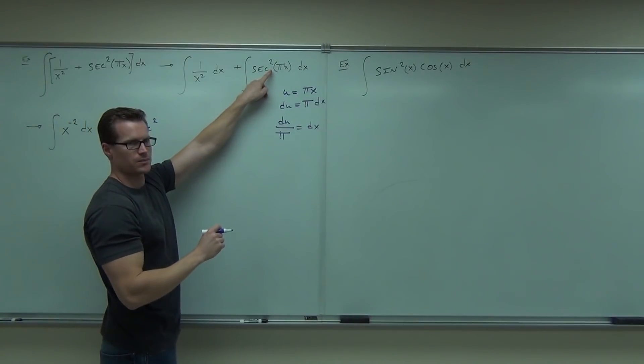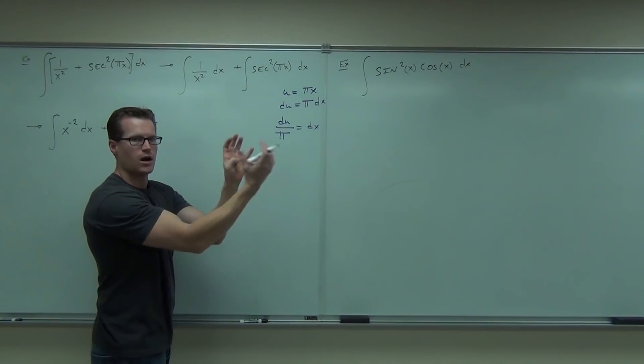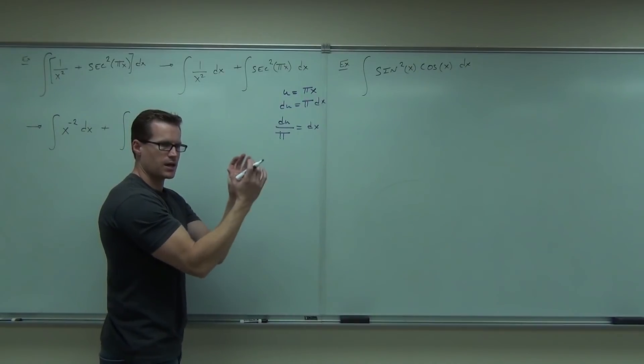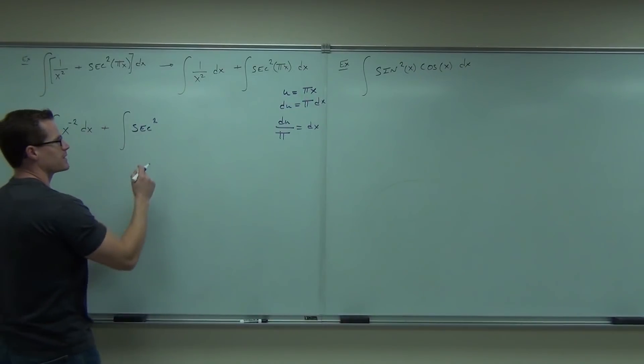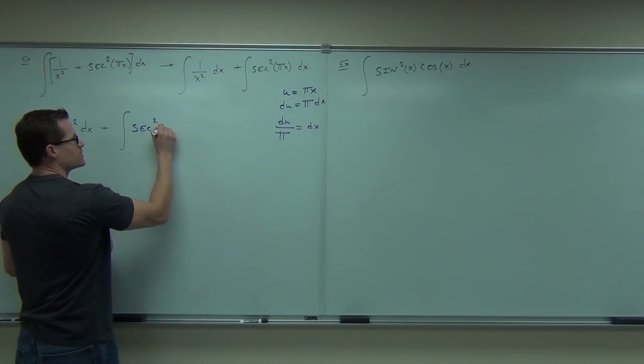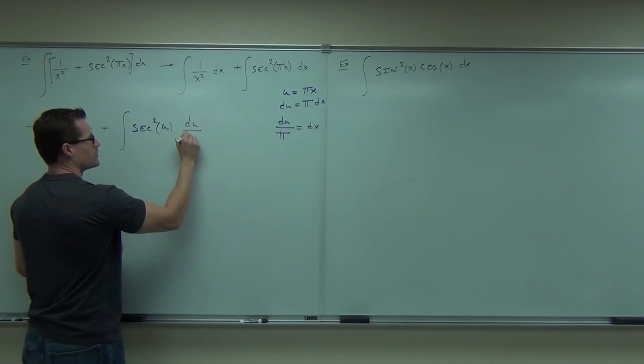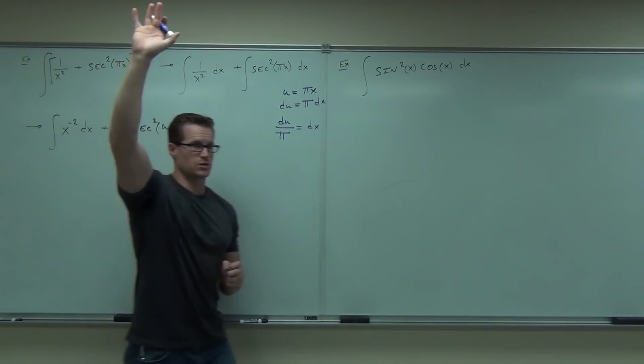So here we're going to have integral of... the secant squared does not change. Only the angle changes. Remember, this is not being multiplied either. That is not a multiplication. That's secant of, not times. That's your angle. You can't manipulate that in any other way besides the substitution. That's going to be a u.